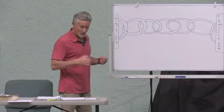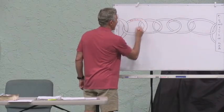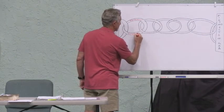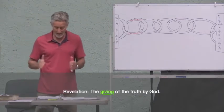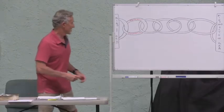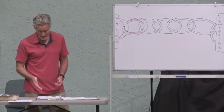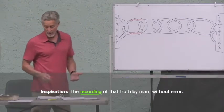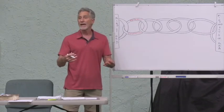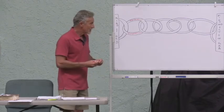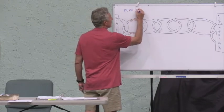The first link is revelation and inspiration. Revelation is the giving of truth by God — that's part of God's mind getting into your mind. Inspiration is the recording of that truth by man without error. God reveals His word and breathes it out so that man records it without error. This first link is absolutely flawless and unbreakable.